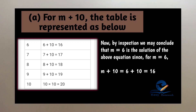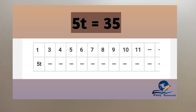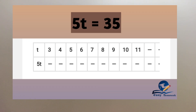Next, we discuss the second table. Complete the table and by inspection of the table, find the solution to the equation: 5t is equal to 35. Here, T is the variable. The LHS part is equal to 5t and the RHS part is equal to 35. T is equal to a particular value.